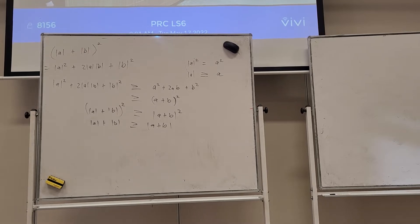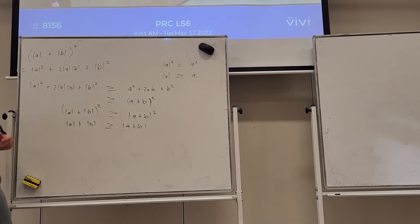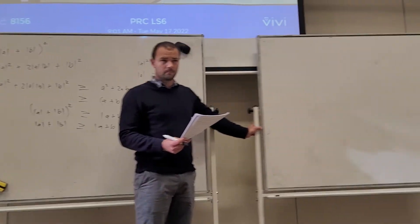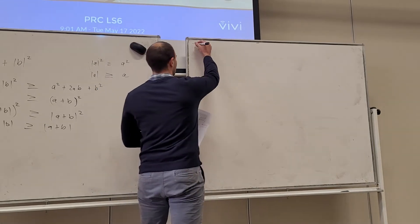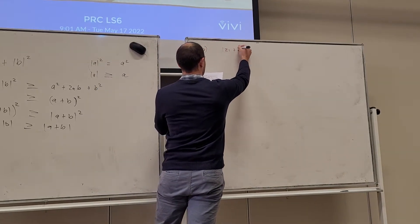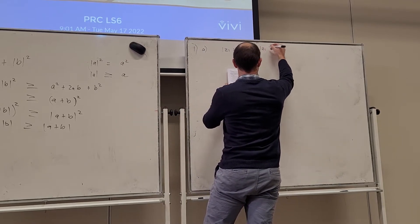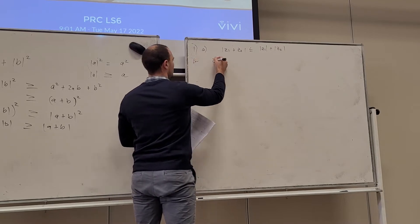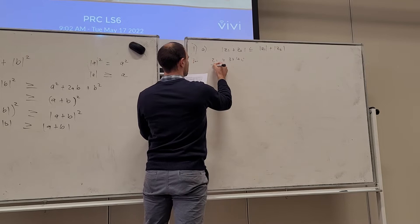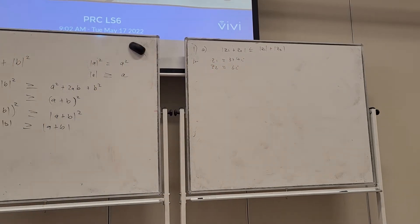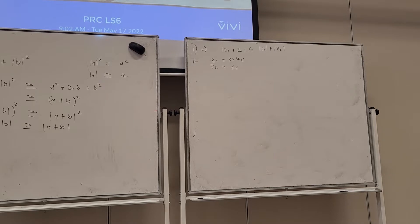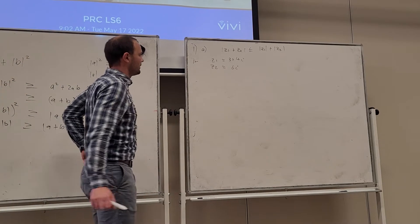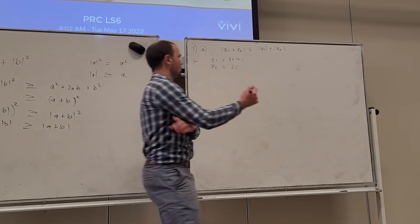Let's move over to the questions involving the triangle inequality. We probably won't do all of them — we'll start with 1A: verify that |Z1 + Z2| ≤ |Z1| + |Z2| where Z1 = 3 + 4i and Z2 = 6i. These are two complex numbers, and we can see they're not parallel because they don't have the same scalar multiple of the horizontal/vertical components. So let's work them out separately first.